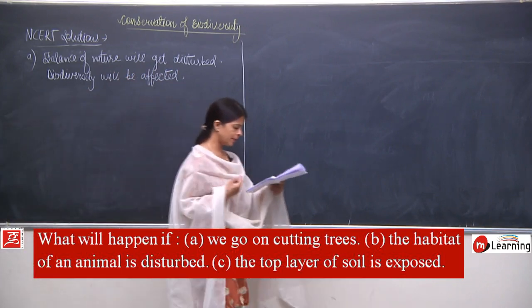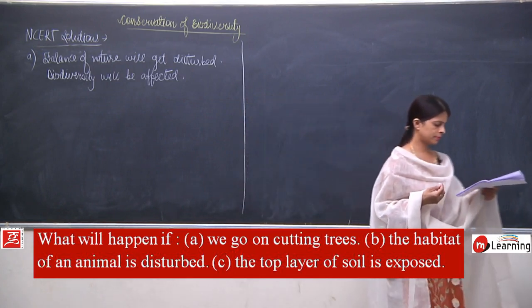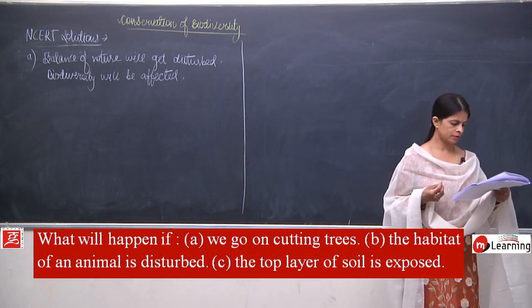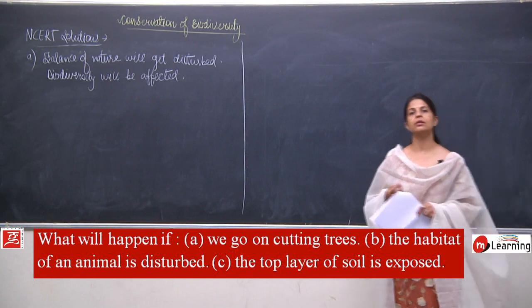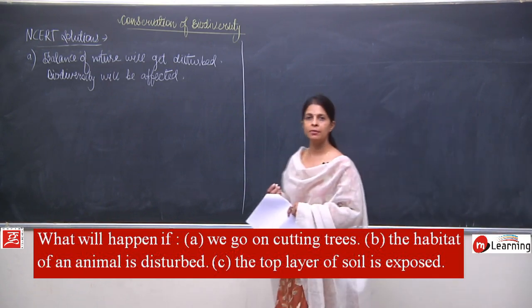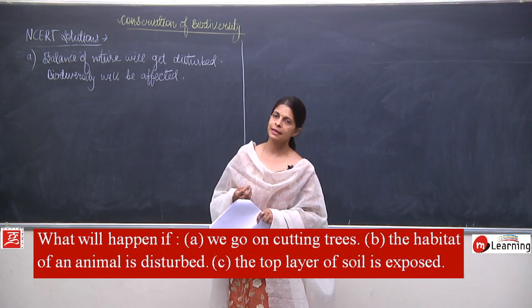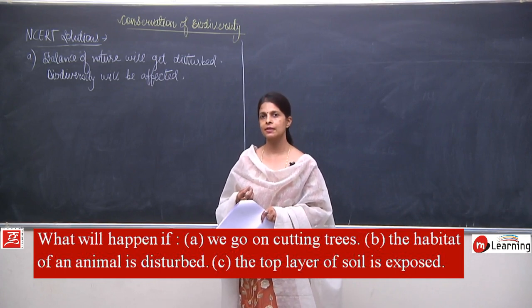Balance of nature will get disturbed, biodiversity will be affected, and all other points. Now come to part B: the habitat of an animal is disturbed. We have just discussed the same thing, so I will not discuss it again.